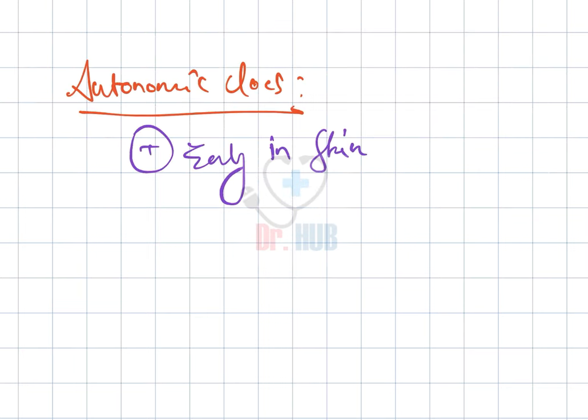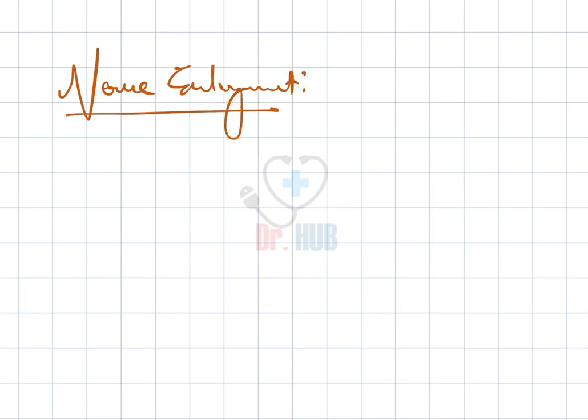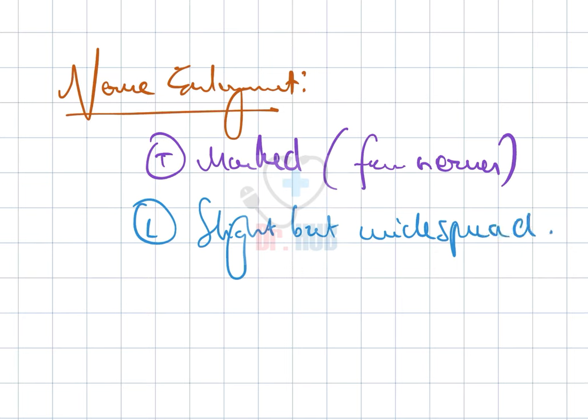Autonomic dysfunction is positive, early in skin and nerve lesions. In case of L, it is late and extensive. For nerve enlargement, it is marked in T and in L, it is slight.